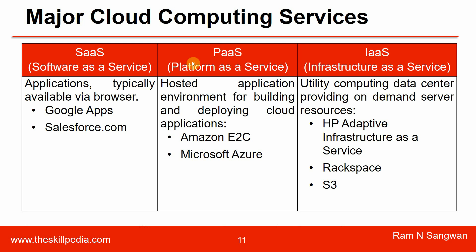Major cloud computing services: Software as a Service — for example, in Oracle Cloud I'm currently delivering using DevCS Visual Builder Studio (VBS), which is like Jenkins, where we create pipelines. It is software given to you as a service so you can fully automate your deployment pipeline. Applications are typically available via a browser, for example Google Apps or Salesforce.com, which are also examples of Software as a Service.